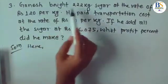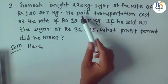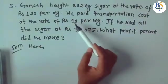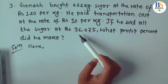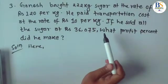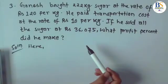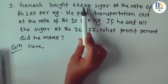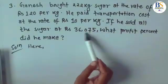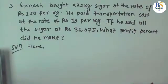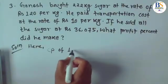Question three: Ganesh bought 222 kg of sugar at the rate of RS 120 per kg. He paid transportation cost at RS 10 per kg. If he sold all the sugar at RS 36,075, what profit percent did he make? We need to calculate the total CP of 222 kg of sugar including transportation cost, and the SP is given, so we can calculate profit percentage.